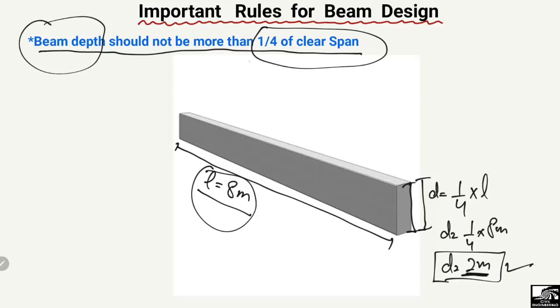This was the last point — the beam depth should not be more than one-fourth of the clear span. Hope you guys understand. Don't forget to subscribe to our channel for daily civil engineering videos. Thank you for watching.